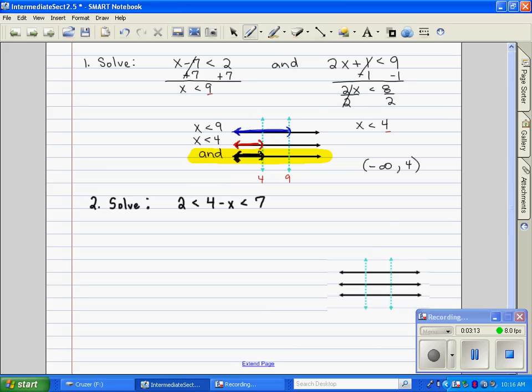Next, I'm going to solve 2 is less than 4 minus x, which is less than 7. Now this is a compact form of a compound inequality. And the first thing we want to do is break it apart into two individual inequalities. So I have 2 is less than 4 minus x. And then I also have, you use the middle term for both, 4 minus x is less than 7. And this is combined with an AND. So we want to know the intersection of these two inequalities.